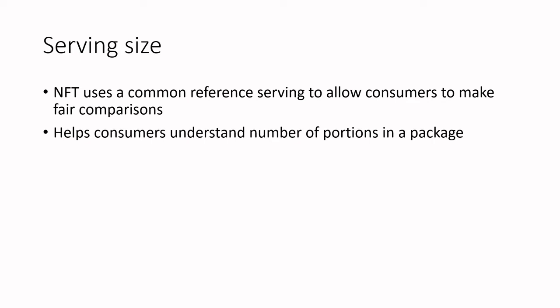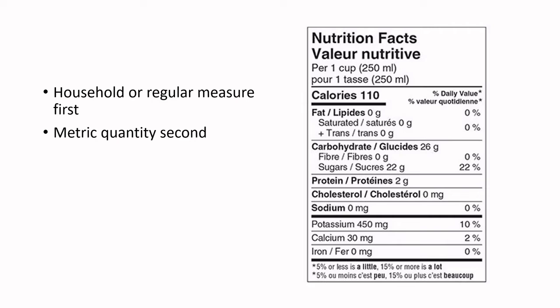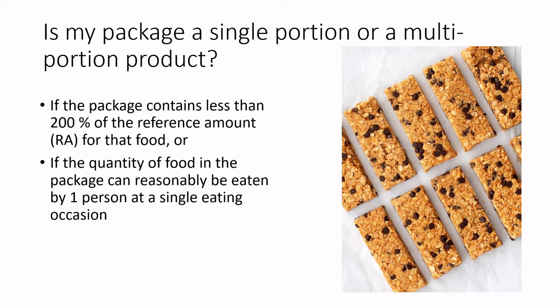As mentioned, the new formatting requires a household or regular measure first — this is clear terminology required by the CFIA. You use the household measure first, so for a product served by volume it would say 'one cup.' Most people with basic kitchens have a set of measuring cups and can understand a one-cup serving. We do also have to include the metric version because it links to our manufacturing standards, so that's always put second and in brackets.